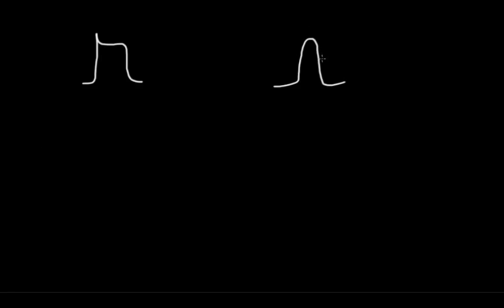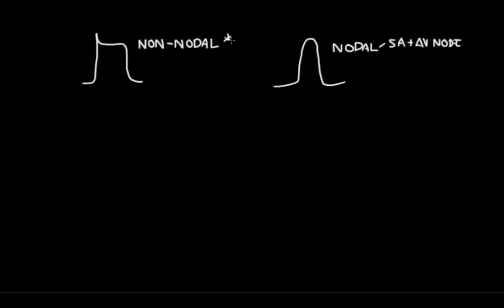We have two different types of action potentials for cardiac cells. We have our nodal action potentials, which work at the SA and the AV node, and we also have our non-nodal action potentials. These work on non-nodal cells, meaning your cardiac myocytes, as well as the cells that make up the His-Purkinje system.